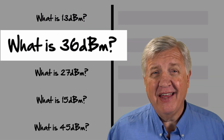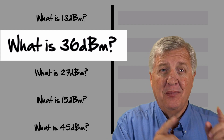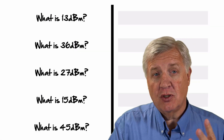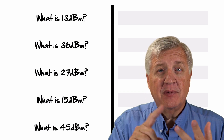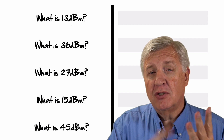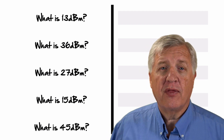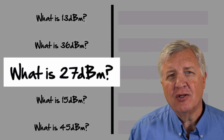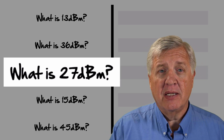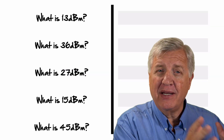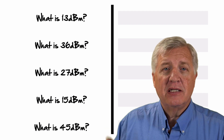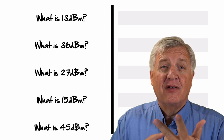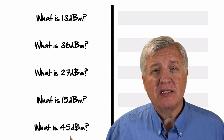Let's try 36. You're going to write that out as 10 plus 10 plus 10 plus 3 plus 3. On the right side, you convert that to 10 times 10 times 10 times 2 times 2. Ten times ten is 100, times another is 1,000, double is 2,000, double again is 4,000. So 36 DBM is 4,000 milliwatts. What about 27? To get to 27 using only tens and threes, take 10 plus 10 plus 10 minus 3. The minus on the left becomes a divide, so this is 10 times 10 times 10 divided by 2: 1,000 divided by 2 is 500. 27 DBM is 500 milliwatts.